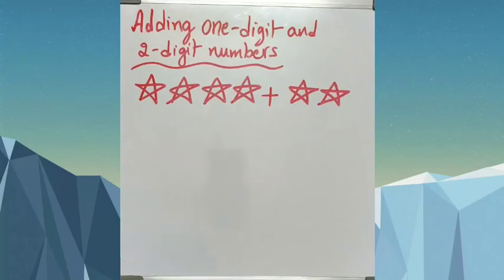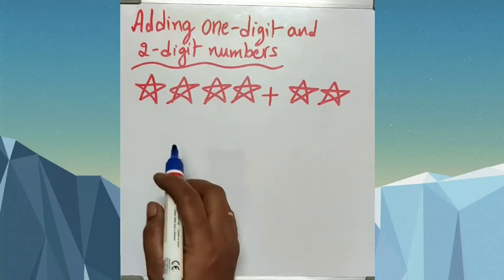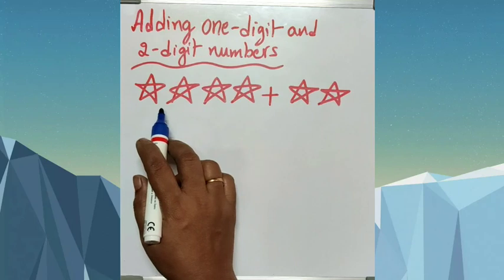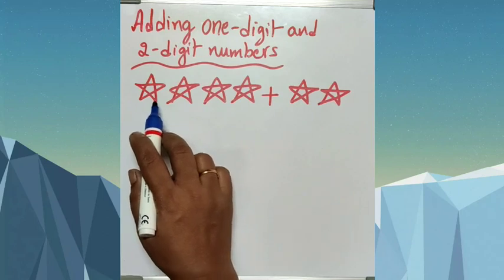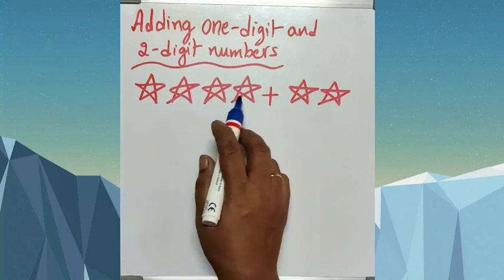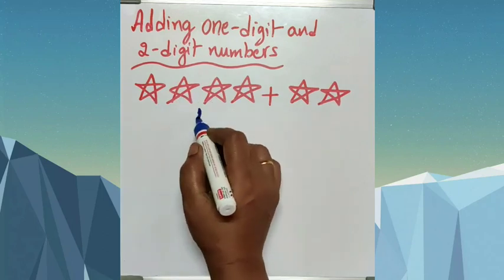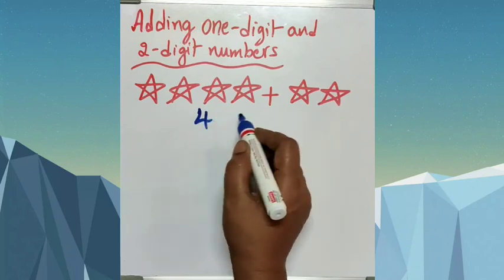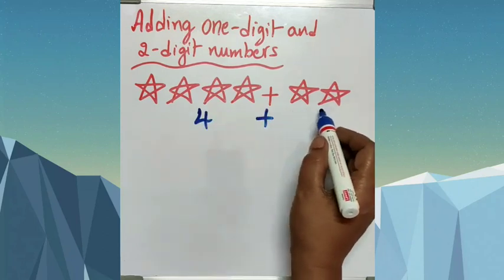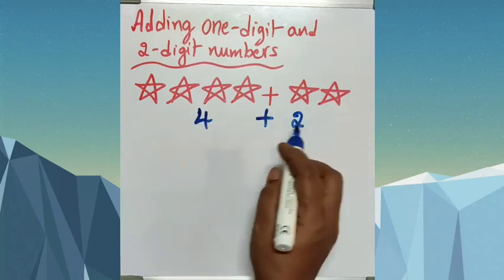Children, you know how to count the objects and write the numbers. Here, let me count how many stars are there. Come on, count: 1, 2, 3, 4. Four plus — here, how many stars? Two.